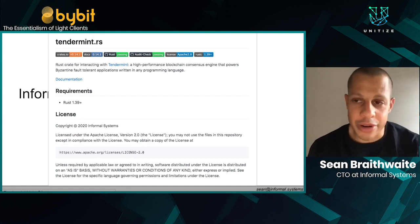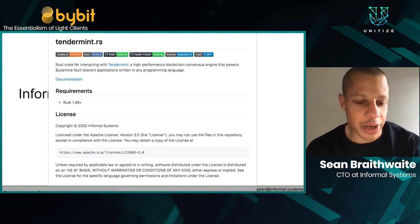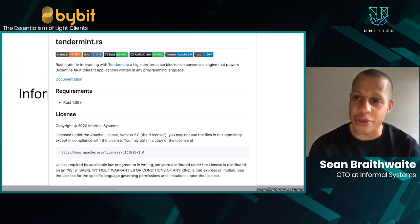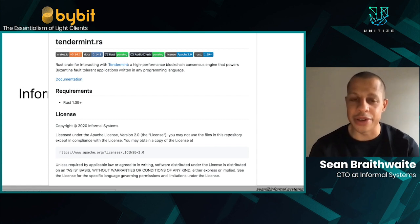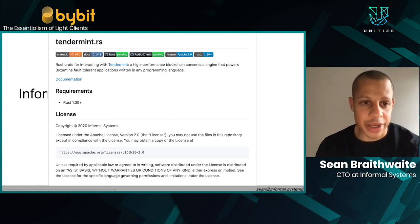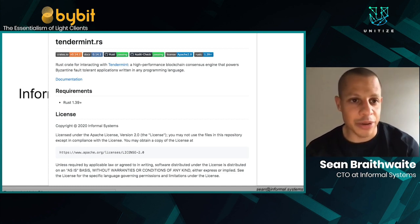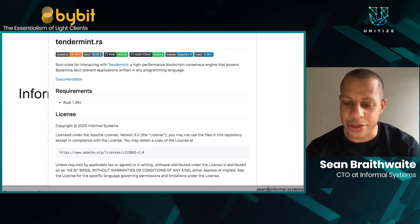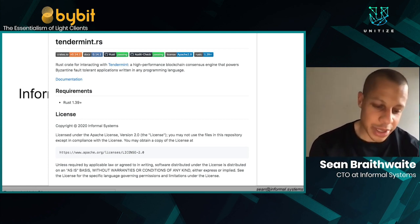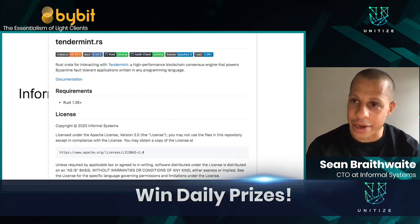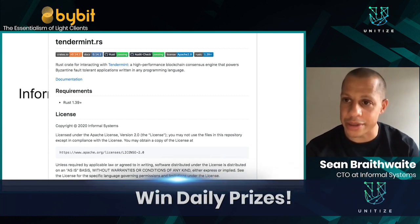We have the Tendermint RS repo that's available on our GitHub, which is eventually going to be a full node of the entire Tendermint protocol. But right now, what we're releasing is just the light client. You could go and play with that and compare it to the Go implementation, which might lead to the question of why would we write another one, and why would we write it in Rust?